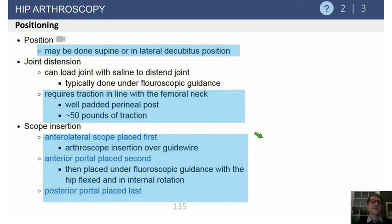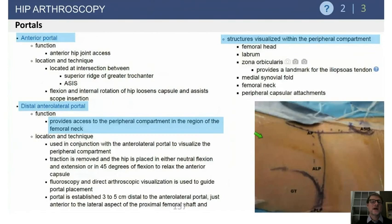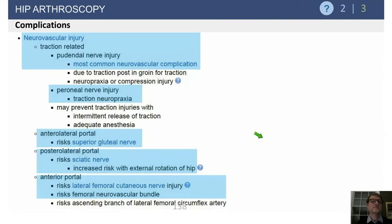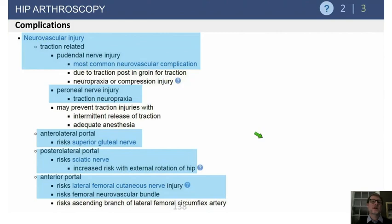Indications for hip arthroscopy are mostly FAI — femoral acetabular impingement. Some of the risks to think about involve traction and perineal nerve temporary palsy. Pudendal nerve palsy is the most common neurovascular complication — neuropraxia or compression injury — from hip arthroscopy. Fortunately, it resolves in the majority of cases.